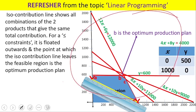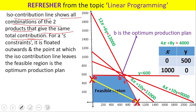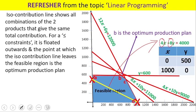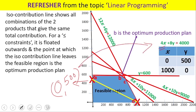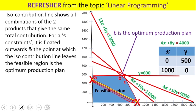Now, what is an iso-contribution line? The iso-contribution line shows all combinations of two products that give the same total contribution. In this example, the yellow line is the iso-contribution line with equation 4x + 8y = 4,000. At the point (0, 500): 4×0 + 8×500 = 4,000. At the point (1,000, 0): 4×1,000 + 8×0 = 4,000. Whatever point on the line, the contribution is always the same.